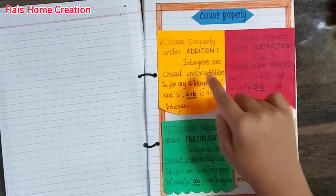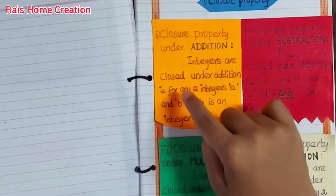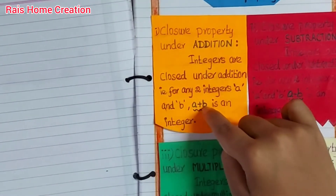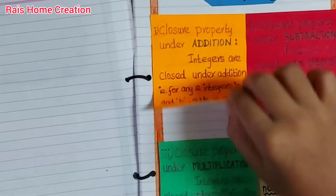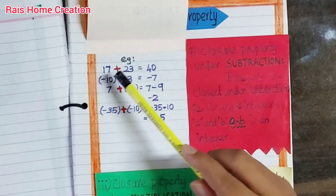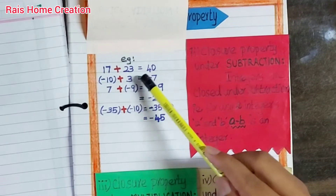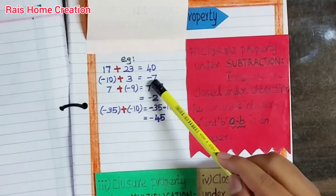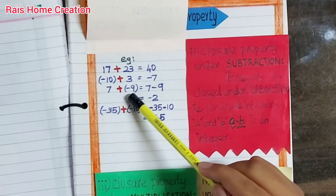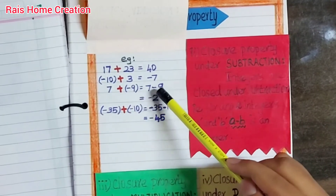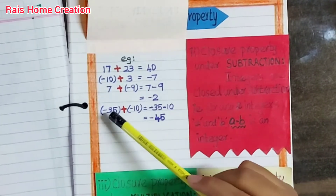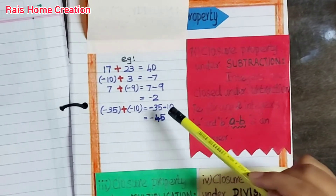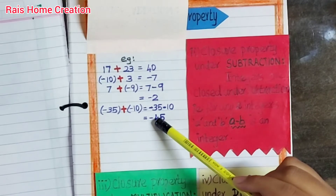Integers are closed under addition — that is, for any two integers A and B, A plus B is an integer. For example: 17 plus 23 equals 40; minus 10 plus 3 equals minus 7; 7 plus minus 9 equals 7 minus 9 equals minus 2; minus 35 plus minus 10 equals minus 35 minus 10 equals minus 45.